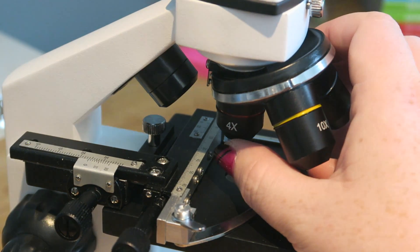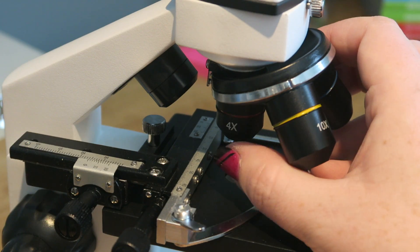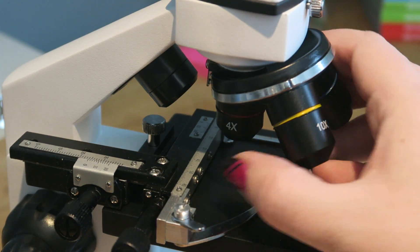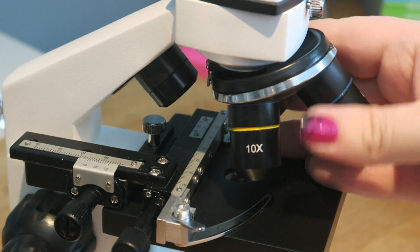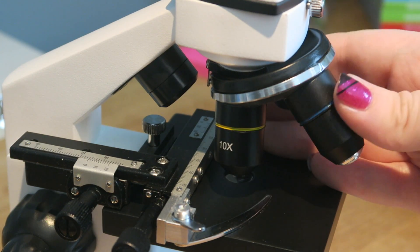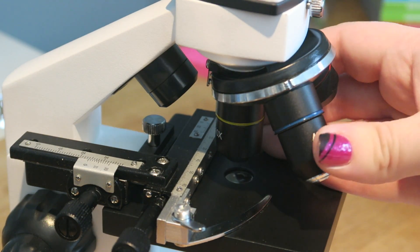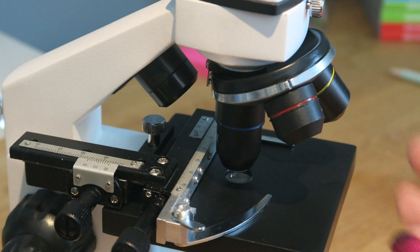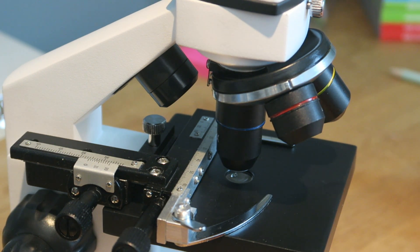Now, when you're trying to find your slide, when you're trying to find something to look at, you'll start with your four times magnification. Once you've found something interesting, you move up to a 10 times magnification, and then you can move up to a 40 times magnification for a really good look at your specimen.